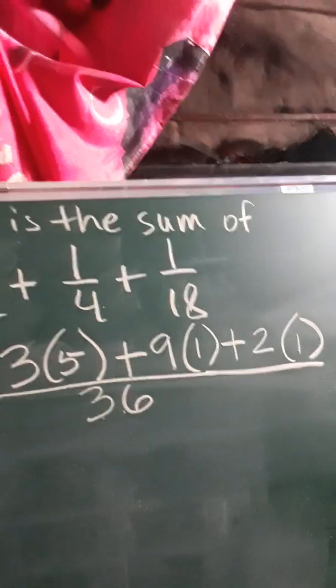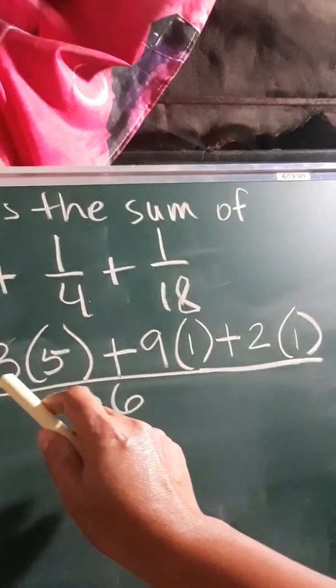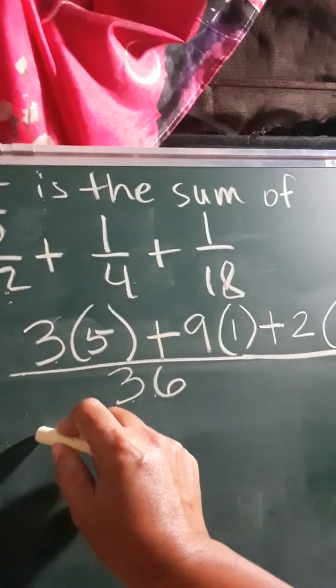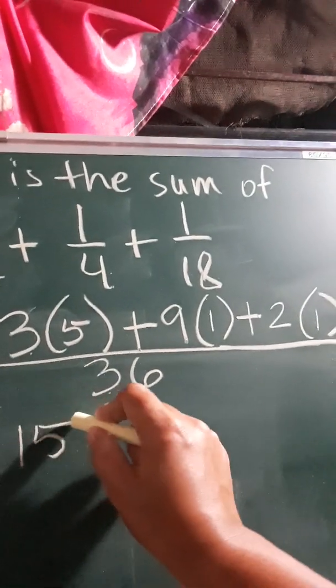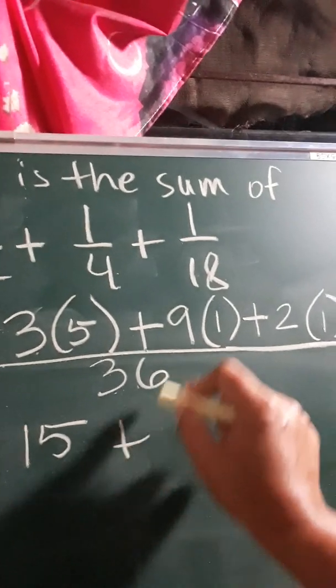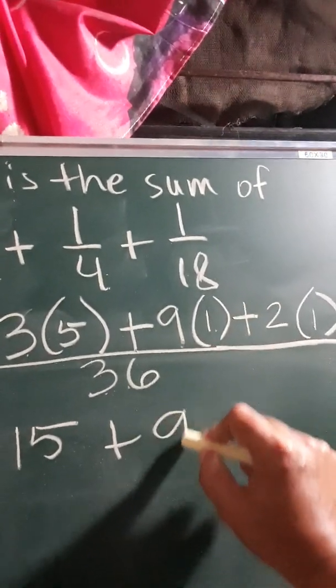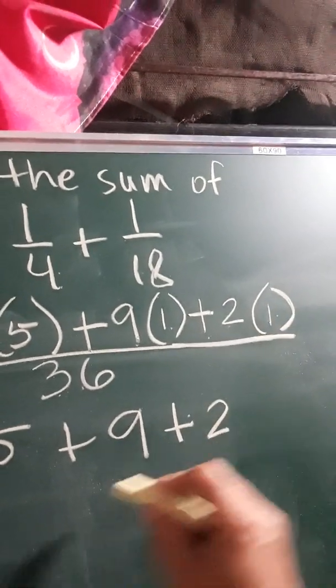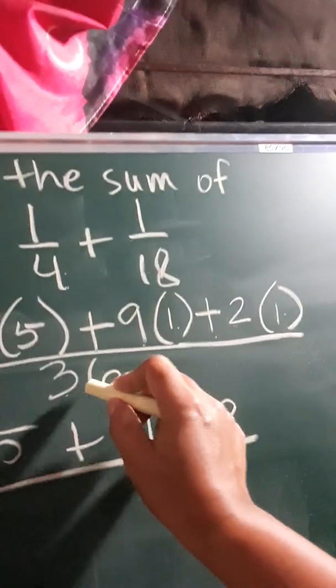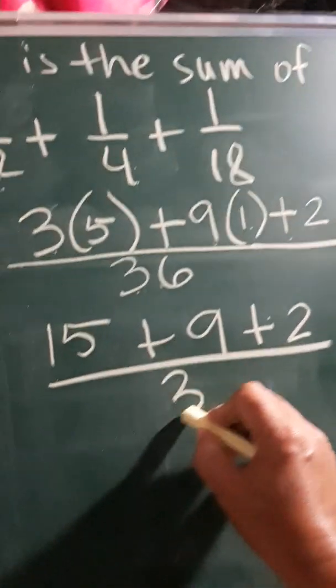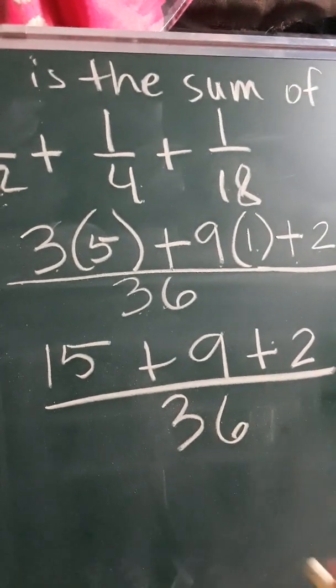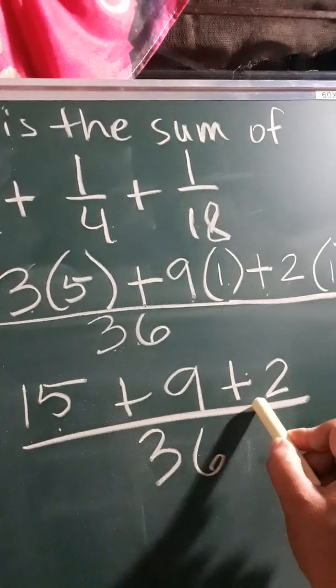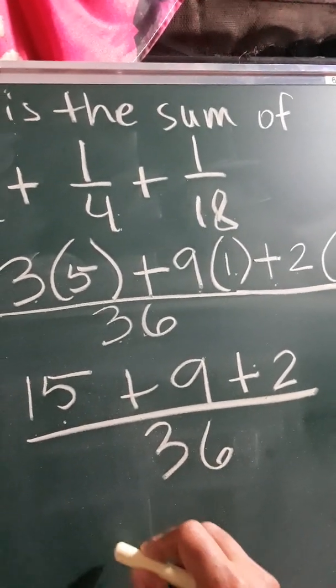Next, of course, PEMDAS. We'll do first the numerator. So 3 times 5, we have 15, plus 9 times 1 is 9, plus 2 times 1 is 2, all over the denominator, which is 36. So 15 plus 9 plus 2 is equal to 26.